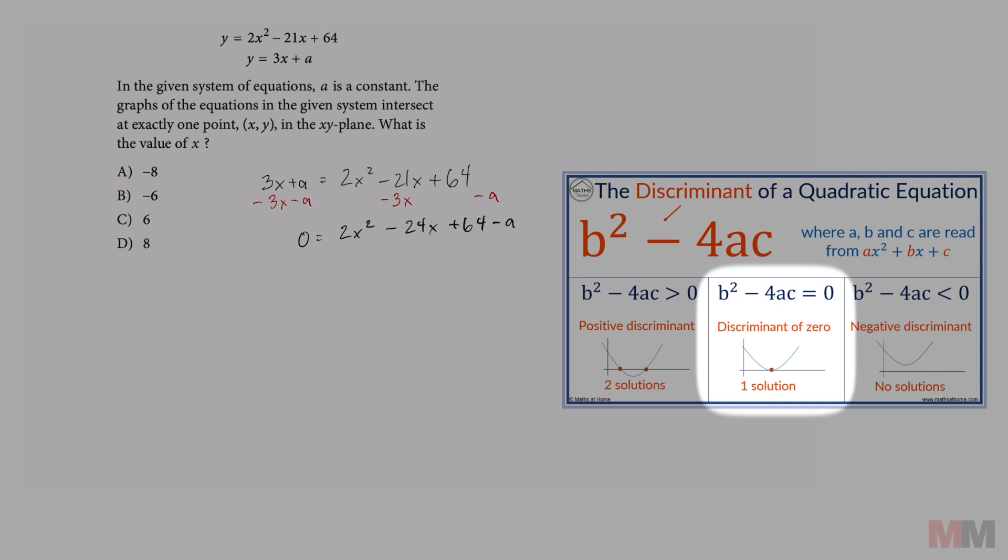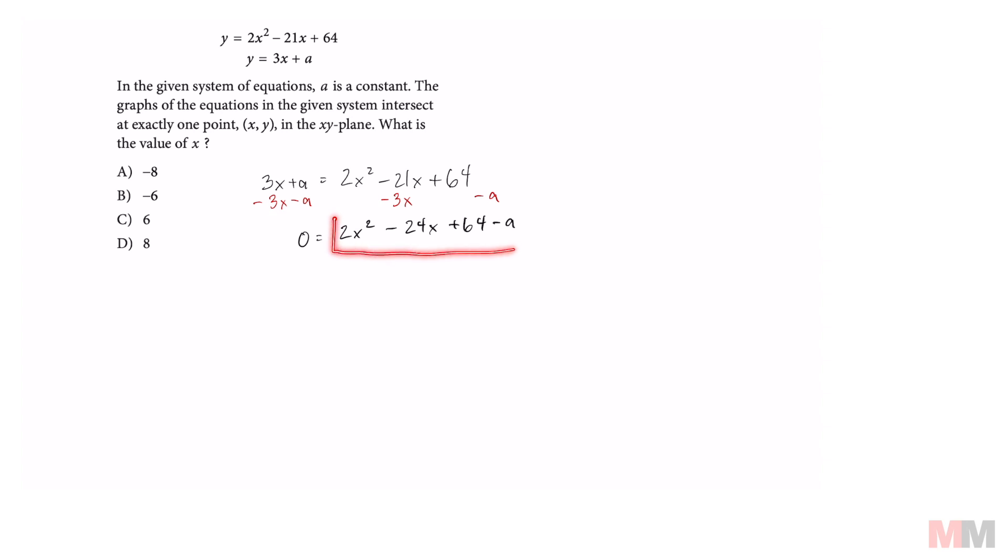So knowing that, we got to get our A, B, and C, and we're going to get that out of this quadratic equation that is in standard form, where your A is going to equal 2, B is going to equal negative 24. And remember that A is just a constant, so your C is really 64 minus A. And we're going to go ahead and plug that in.